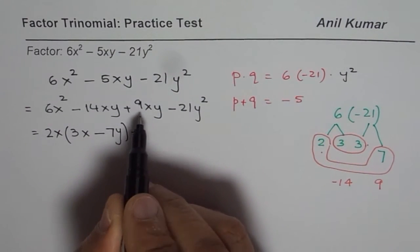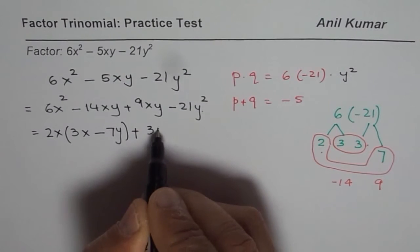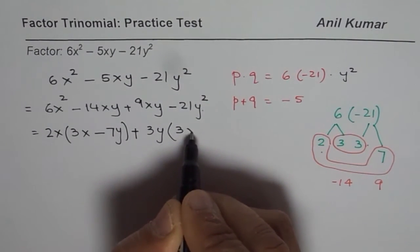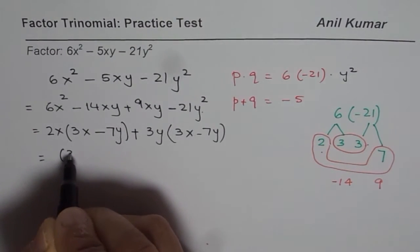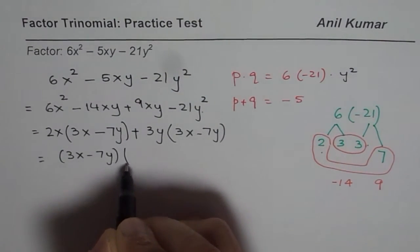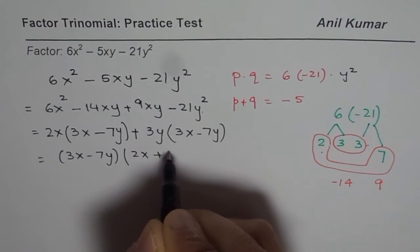In this case, we have 3 common and y common, 3y. So again, we get 3x - 7y. Now we can take 3x - 7y as common and what we get is 2x + 3y.